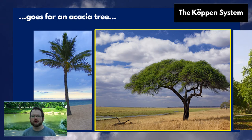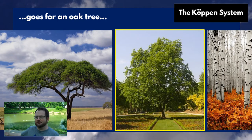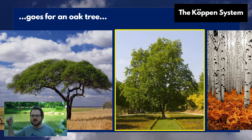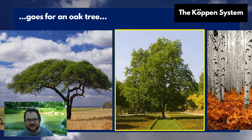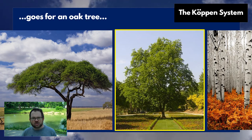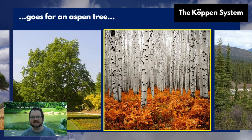The same goes for an oak tree. Oak trees don't thrive in places that don't freeze, but they also don't thrive in places that are ice caps or permafrost tundra. You know a lot about the climate already just by seeing that there's an oak tree there.